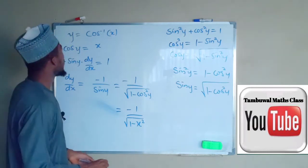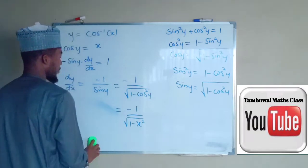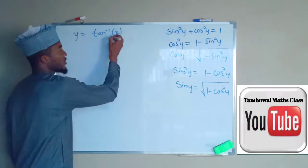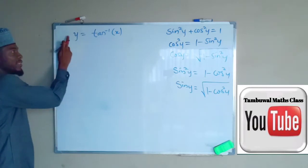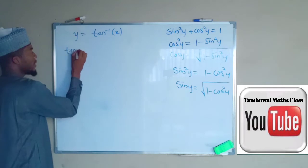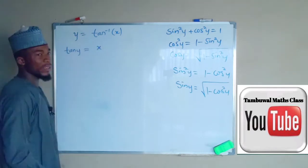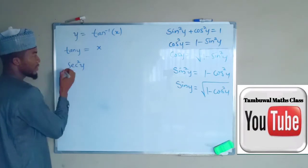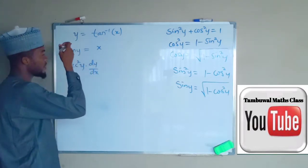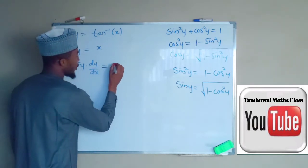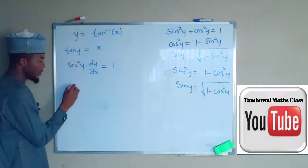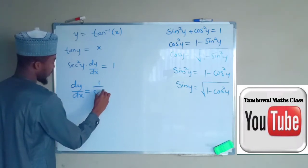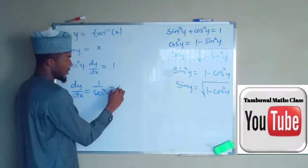Let us look at the last one, which is tan inverse of x. Suppose y = tan inverse of x. We do the same thing — multiply tan to both sides, so on the left hand side we have tan y and on the right hand side we have x. If you differentiate tan y you obtain secant squared y times dy/dx by the chain rule, and on the right hand side we have 1. So dy/dx = 1 / sec²y.